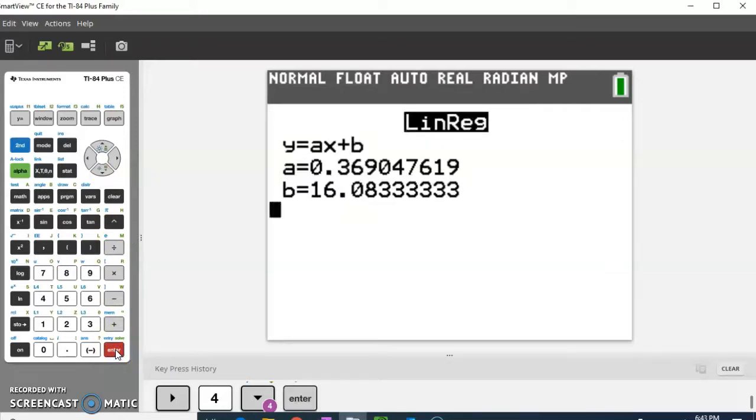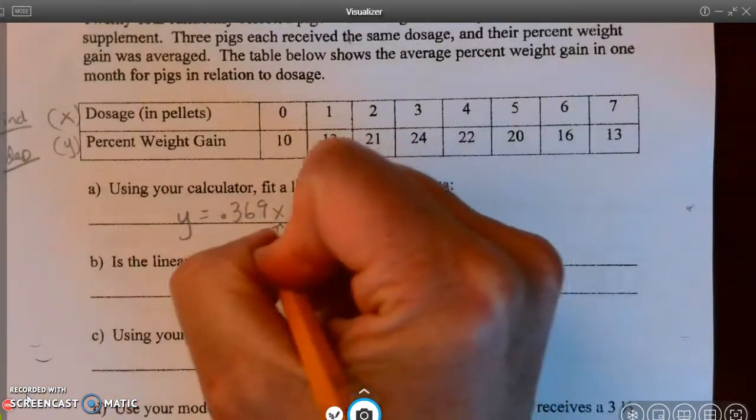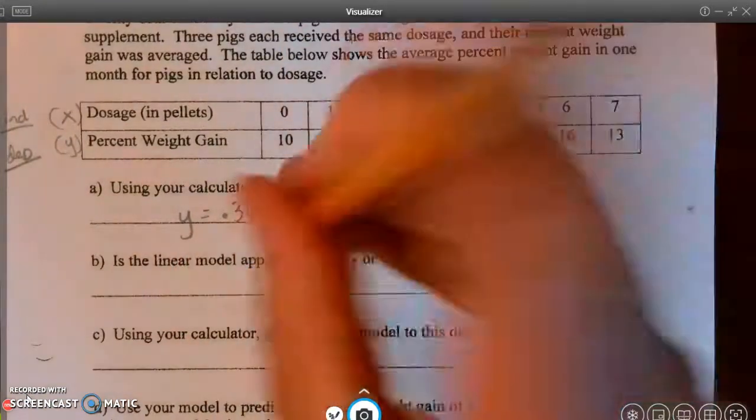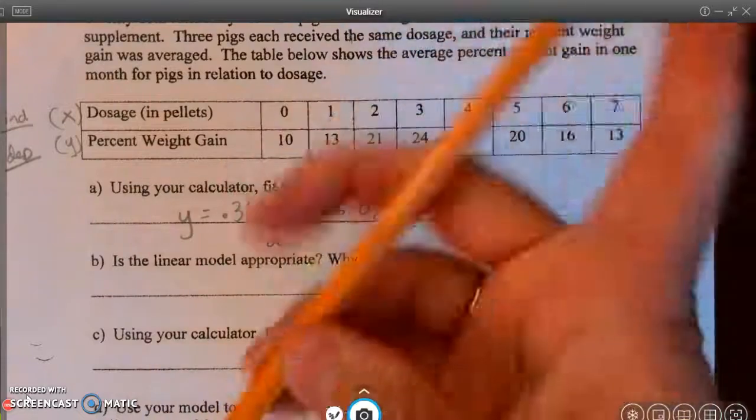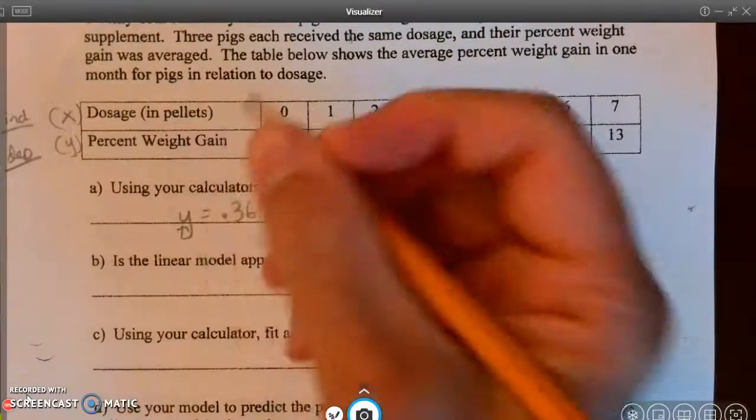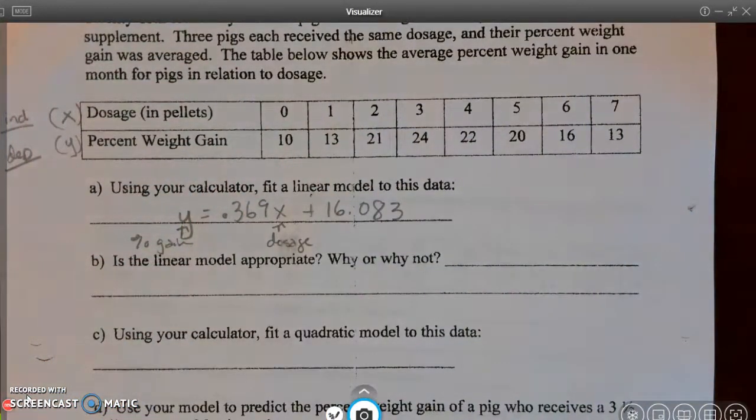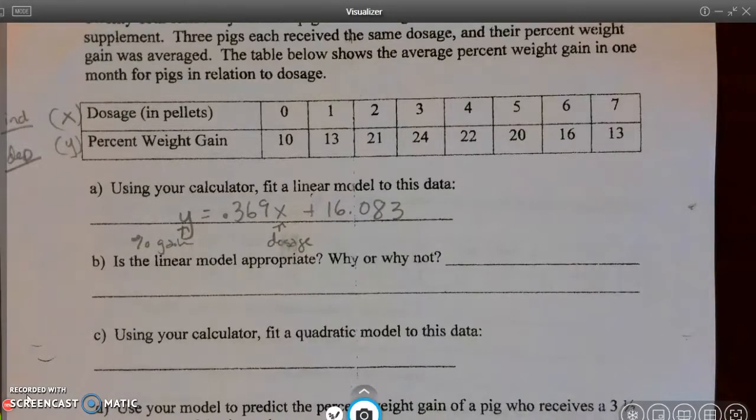Let's see. Let's go to three decimal places. So I've written my linear model down. X stands for my dosage. And Y stands for my percent gain.